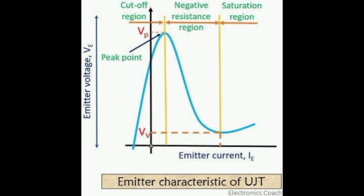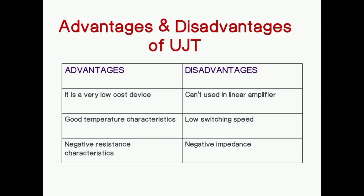This is the voltage-current characteristics of the unijunction transistor. The advantages of UJT are: it is a very low cost device, it has good temperature characteristics, and it has negative resistance characteristics.